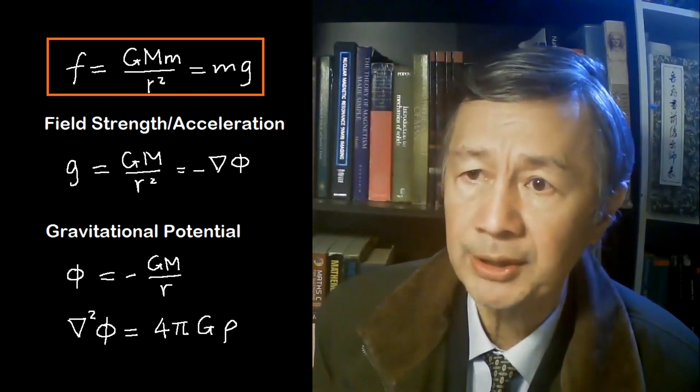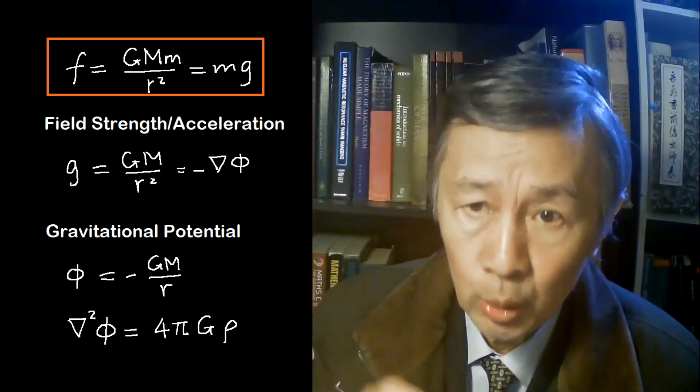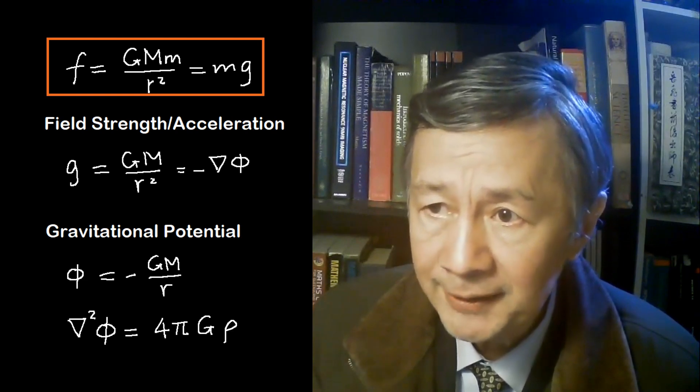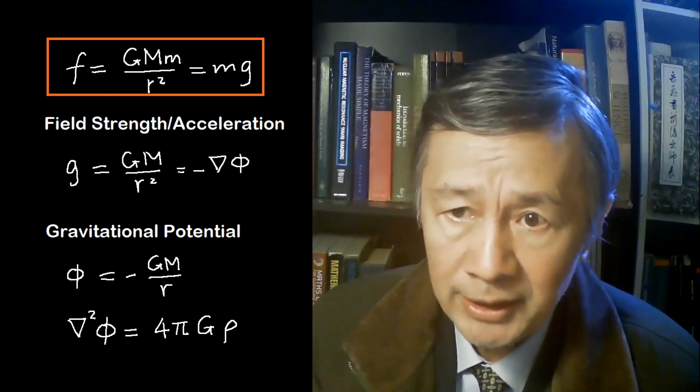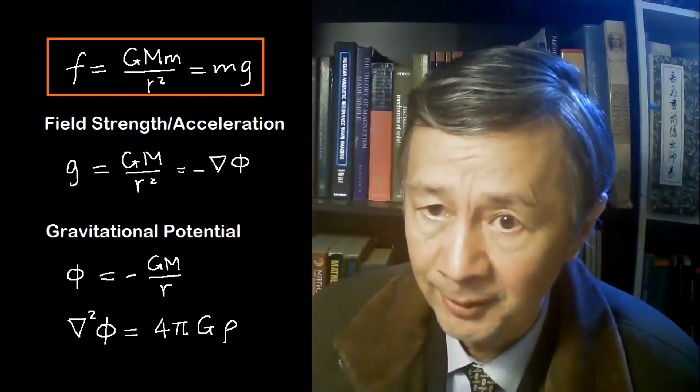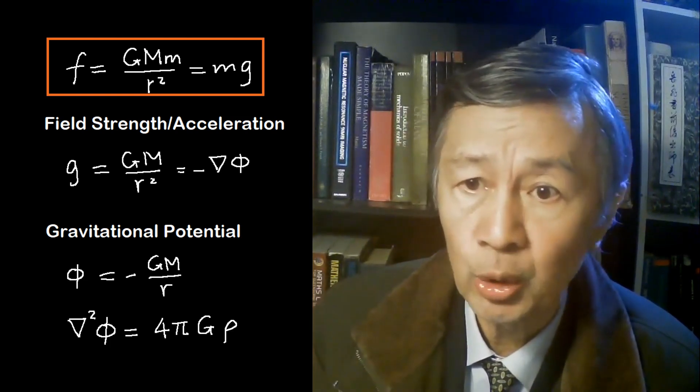Using Gauss law, a Poisson equation can be derived, where rho represents the mass density. In passing, this is the equation to be used to link Einstein's metric tensor in his general relativity.